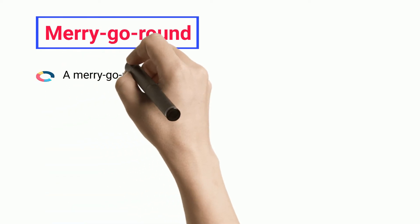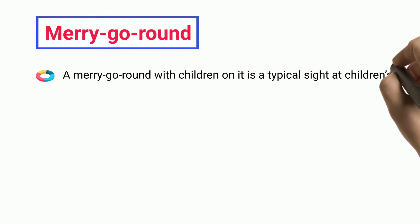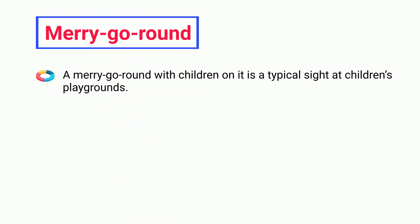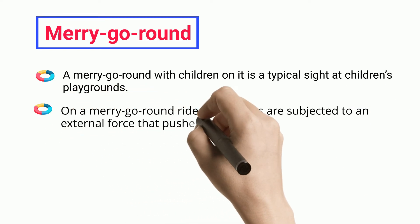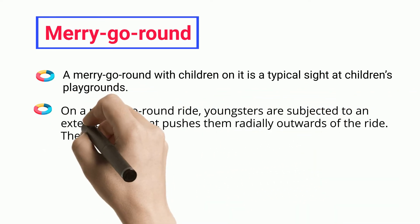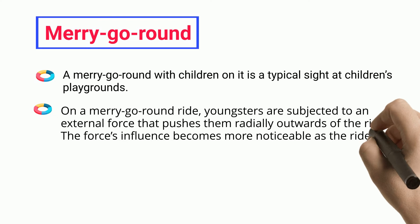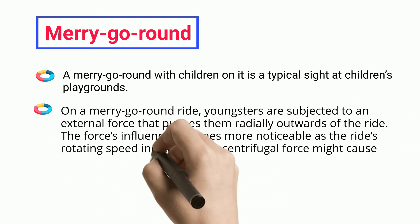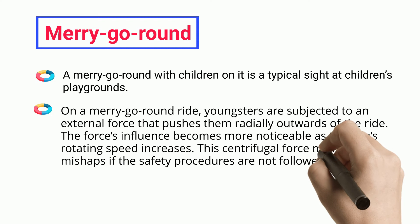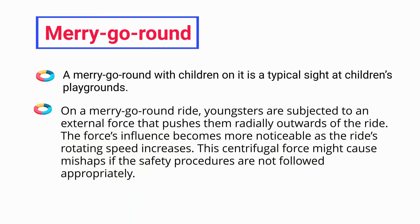A merry-go-round with children on it is a typical sight at children's playgrounds. On a merry-go-round ride, youngsters are subjected to an external force that pushes them radially outwards. The force's influence becomes more noticeable as the ride's rotating speed increases, and this centrifugal force might cause mishaps if safety procedures are not followed appropriately.